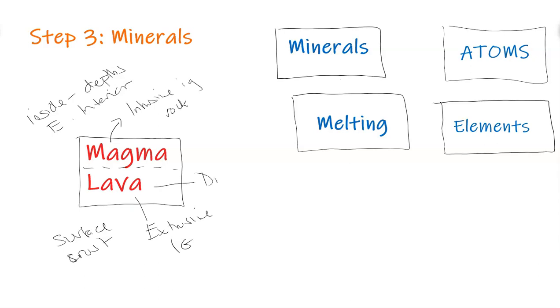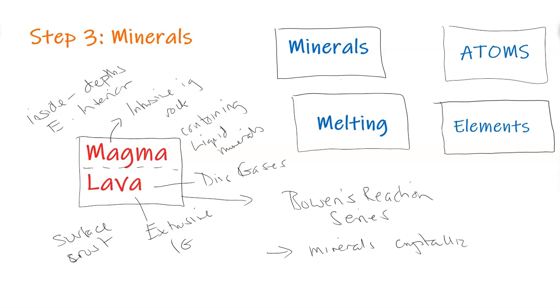They're pretty much the same composition chemically. Lava may have some more dissolved gases based on the location, but generally they're the same material. This is containing all of the liquid minerals. This is where we can bring in the Bowen's reaction series and discuss how certain minerals would crystallize and form their solid structure at certain temperatures.